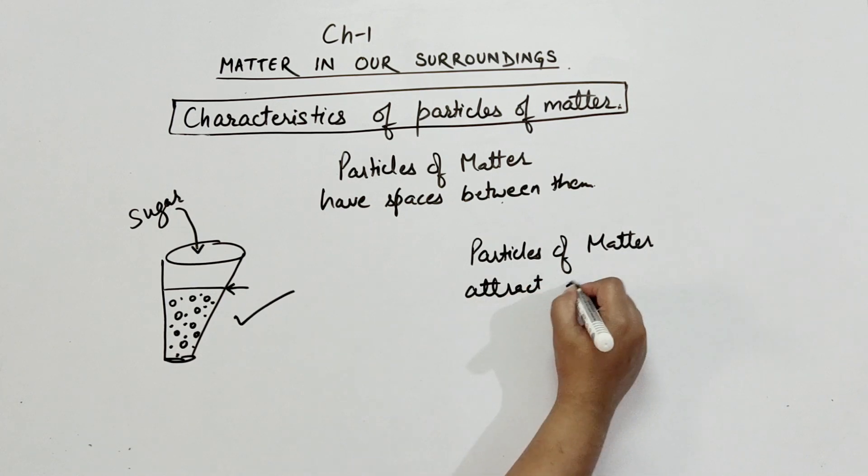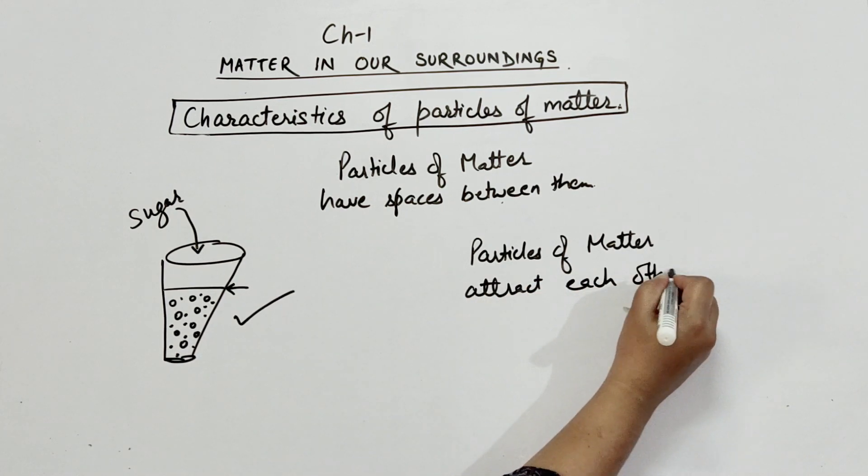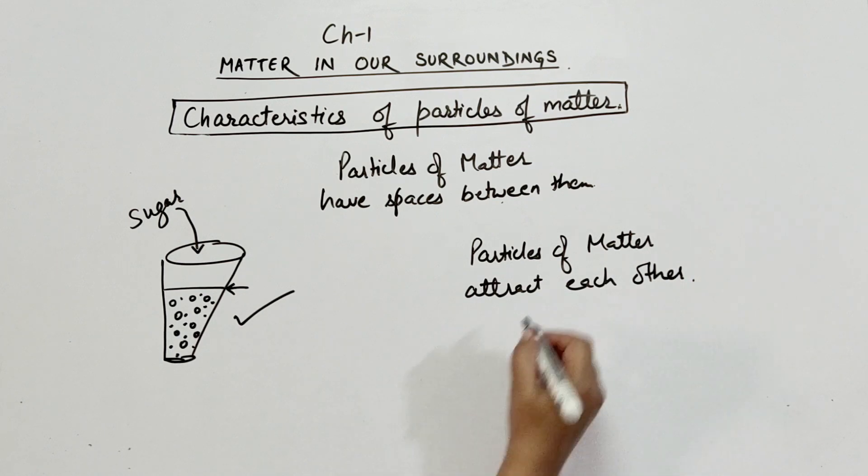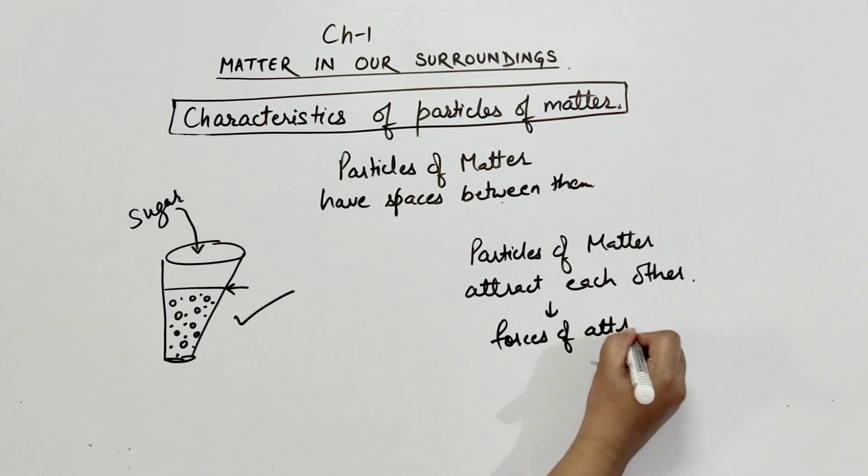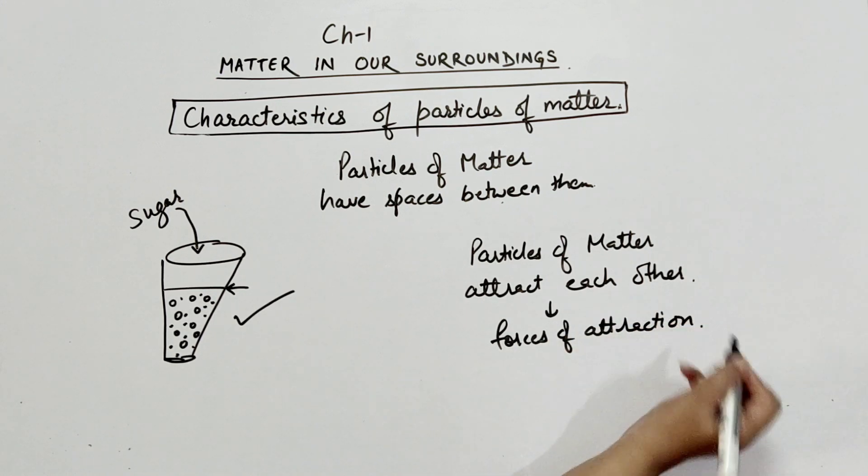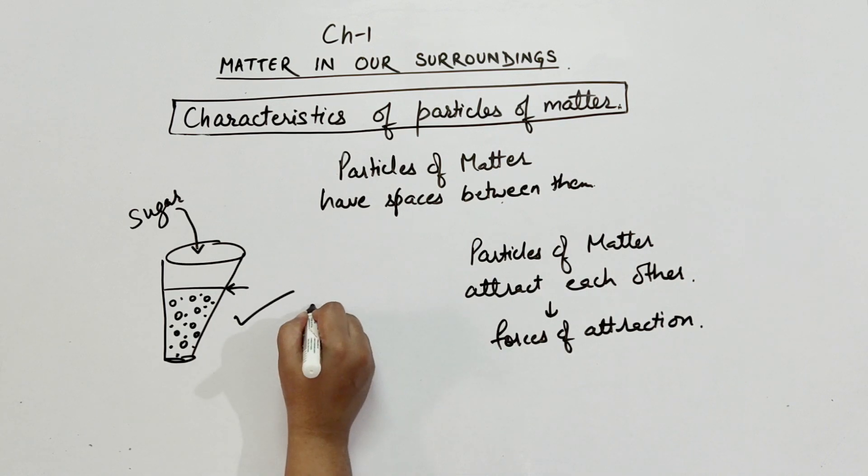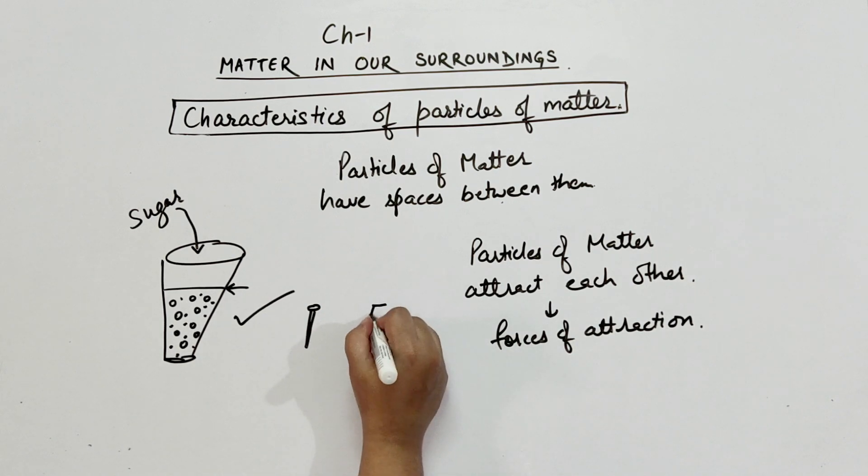And then the last property is that particles of matter attract each other. Actually there are some forces of attraction between the particles. Let's perform an activity for this. Take an iron nail and a piece of chalk.